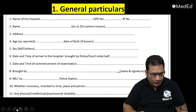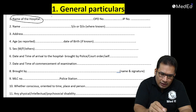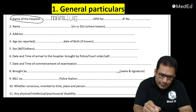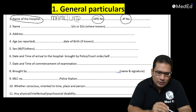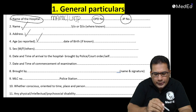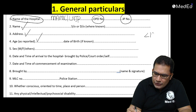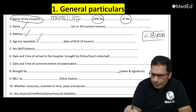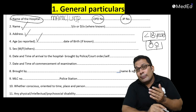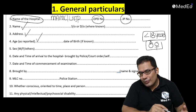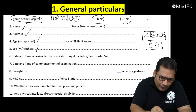General particulars: write the name of the hospital — for example MAMC or LNGP Hospital — OPD number, IP number (outpatient and inpatient numbers), name, address, age. A question can be asked: what do you mean by juvenile? Juvenile means less than 18 years, male or female, as per the Juvenile Justice Act. Questions about heinous crime and petty crime can also be asked. Then record the sex — male or female.